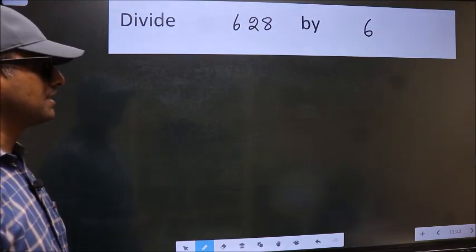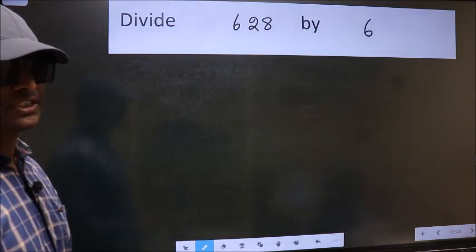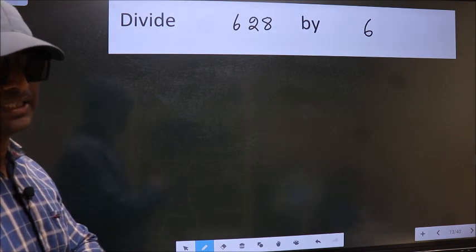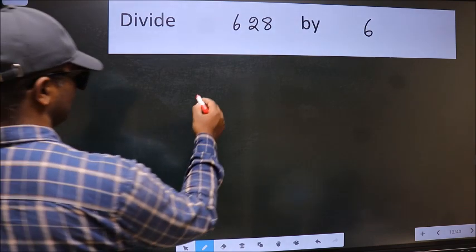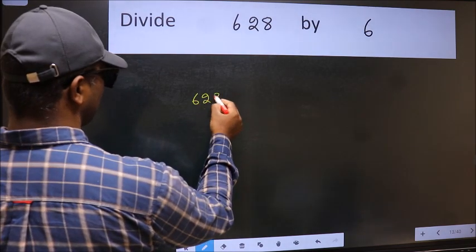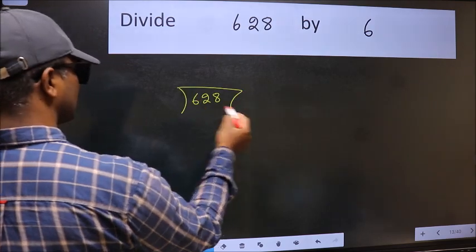Divide 628 by 6. To do this division, we should frame it in this way: 628 here and 6 here.